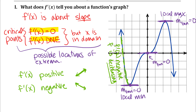Past that local minimum, the slopes of the tangent lines are positive. So thinking about little tangent lines to that curve — slopes are positive, then zero at that critical point at the origin, and then positive slopes of tangent lines to the right of that. Throughout that region, the derivative is positive and the function is increasing. Then to the right of that local maximum, the derivative appears to be negative, slopes of the tangent lines are negative, and the function is decreasing.